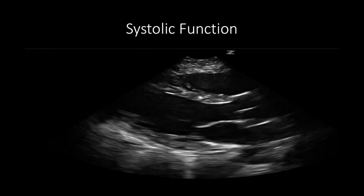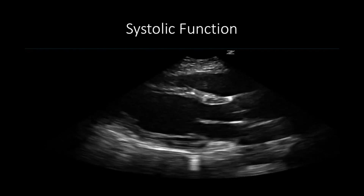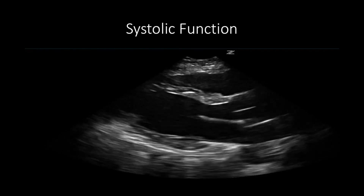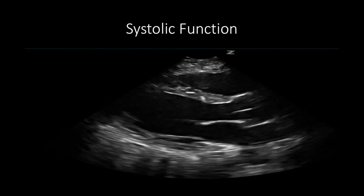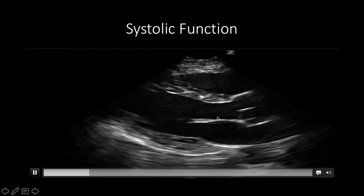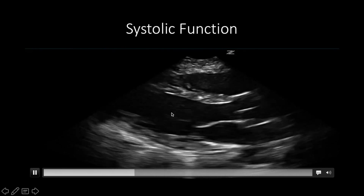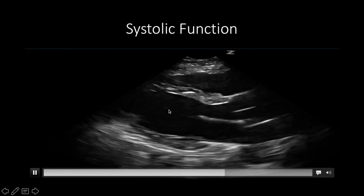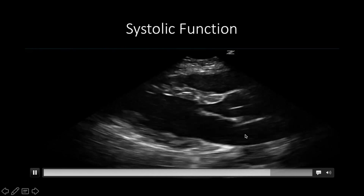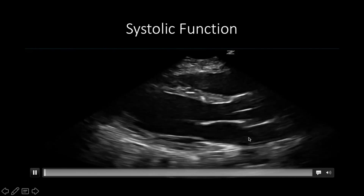This is an example of a heart with good systolic function. In this view, we can appreciate the left ventricle, the left atrium, and the anterior leaflets of the mitral valve.